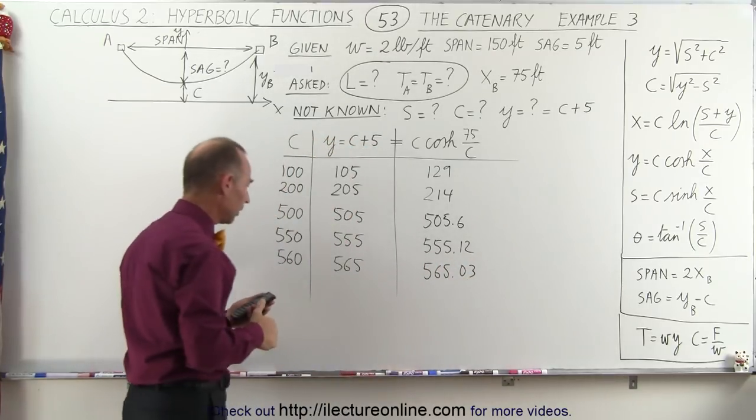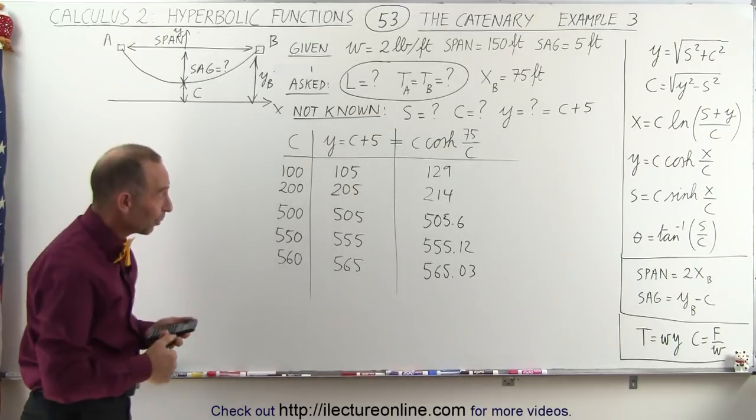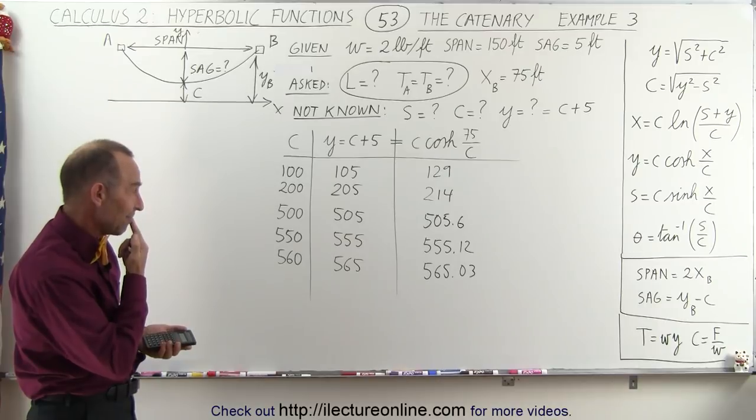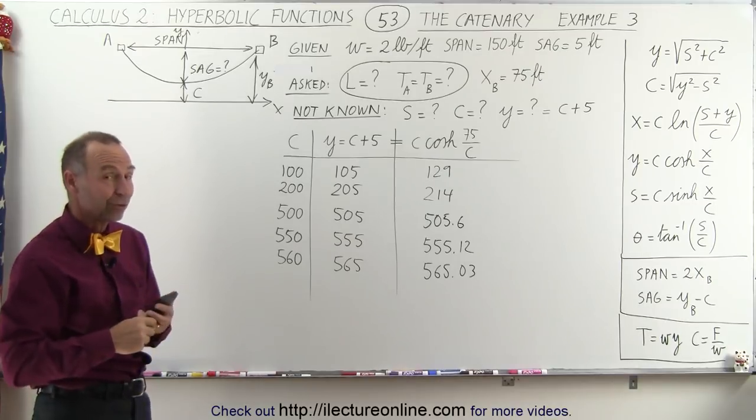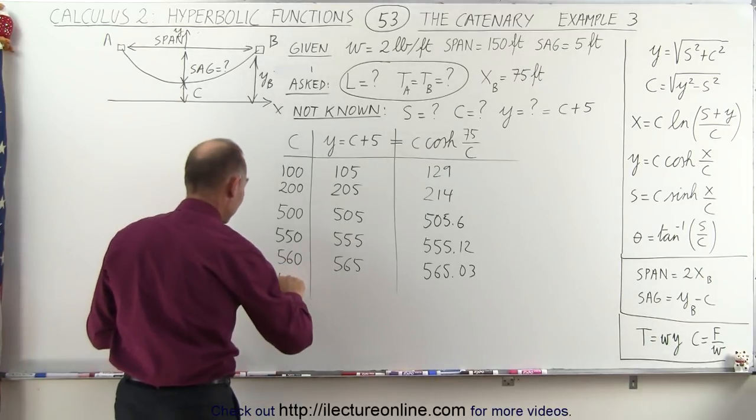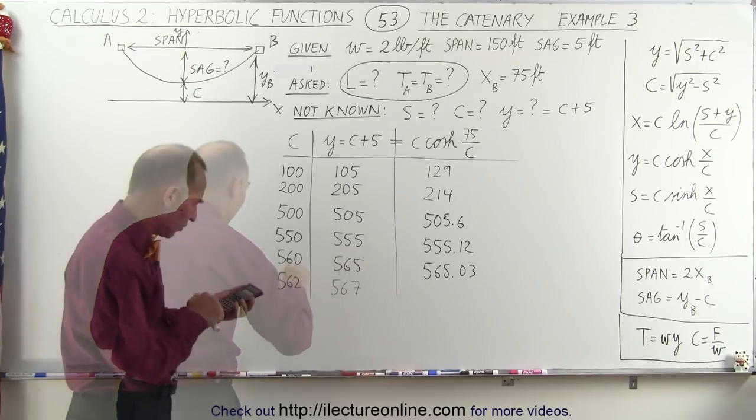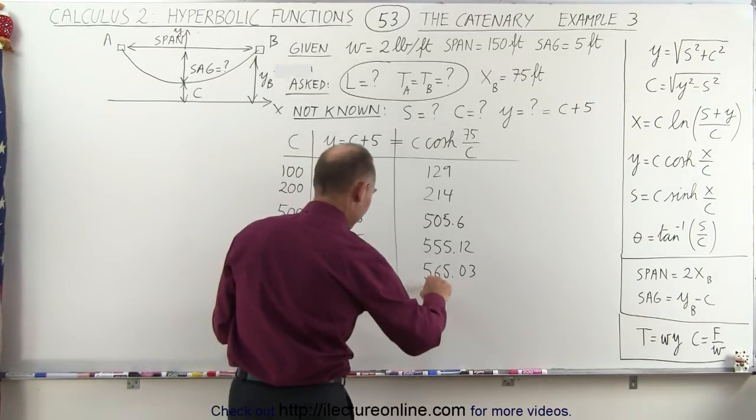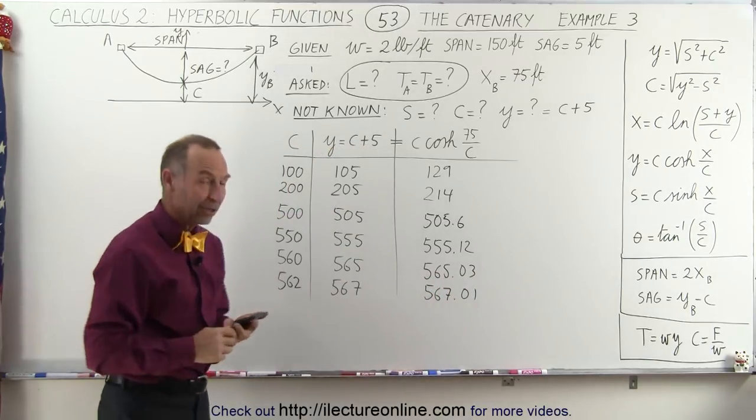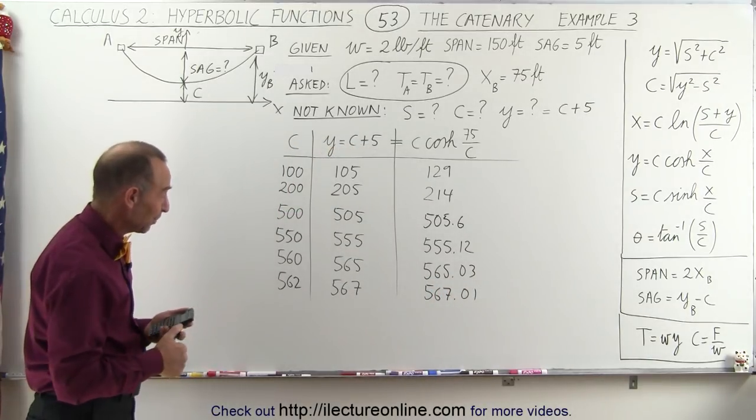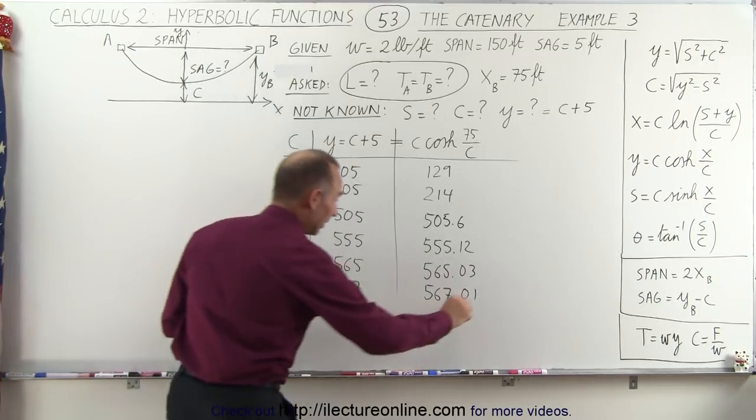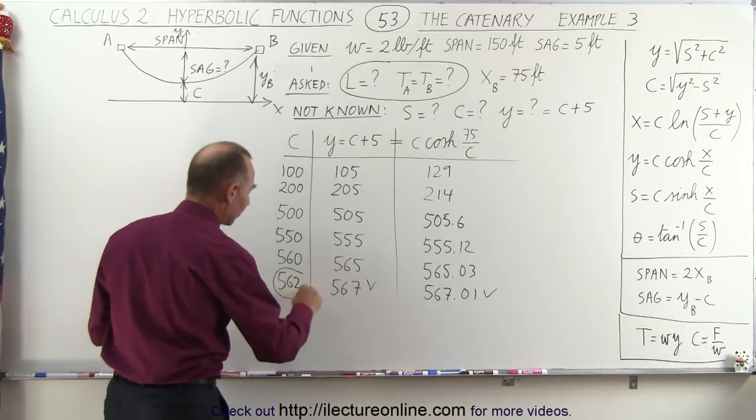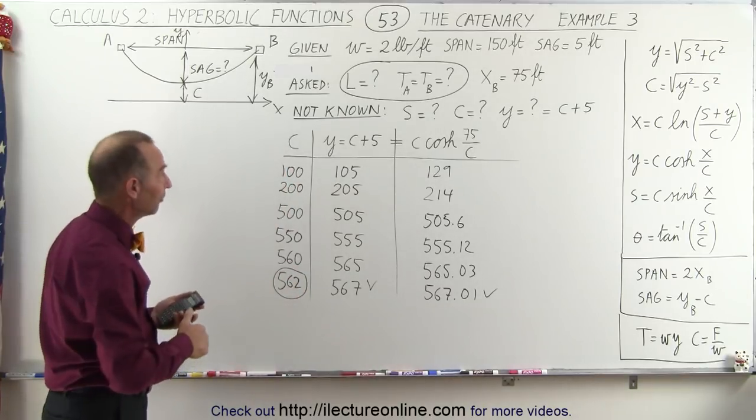We're getting really close. We could almost stop at this point, but I want to get just a little bit closer. So it looks like maybe 562 might just do it. All right. One more try. 562. And I got 567.01. Do you think we're close enough? We're pretty close. So I think we're good here. This is almost exactly the same as this. I will take this as a good value for c. Close enough.